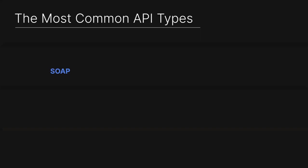Everything really started with SOAP. SOAP is Simple Object Access Protocol. It's basically a mechanism — it's very heavy-handed, but it's really based on XML over HTTP.